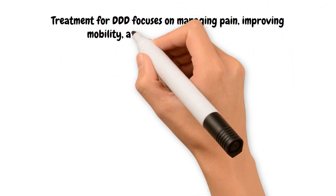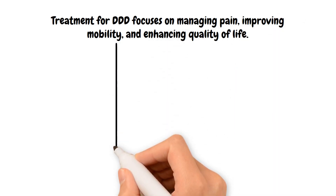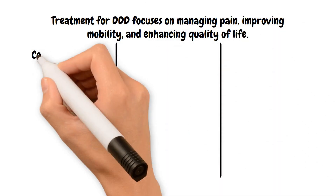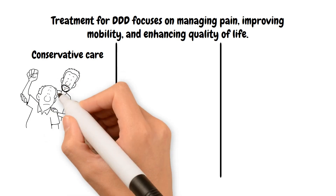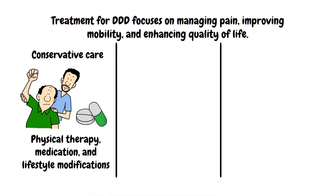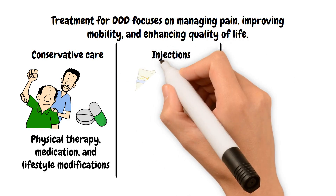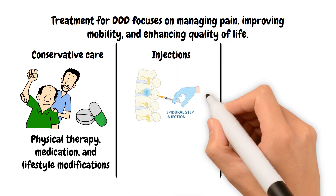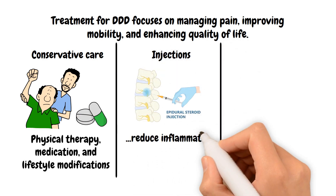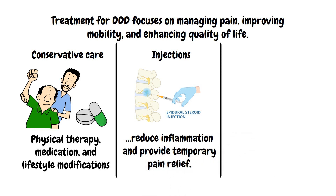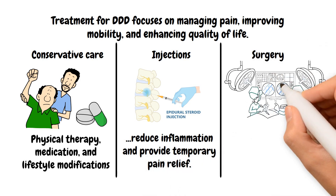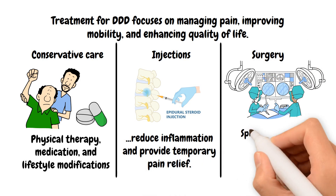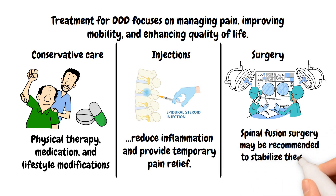Treatment for DDD focuses on managing pain, improving mobility, and enhancing quality of life. Some options include conservative care, such as physical therapy, medication, and lifestyle modifications to alleviate symptoms. Injections, such as epidural steroid injections, can reduce inflammation and provide temporary pain relief. And in specific cases, spinal fusion surgery may be recommended to stabilize the spine and relieve symptoms.